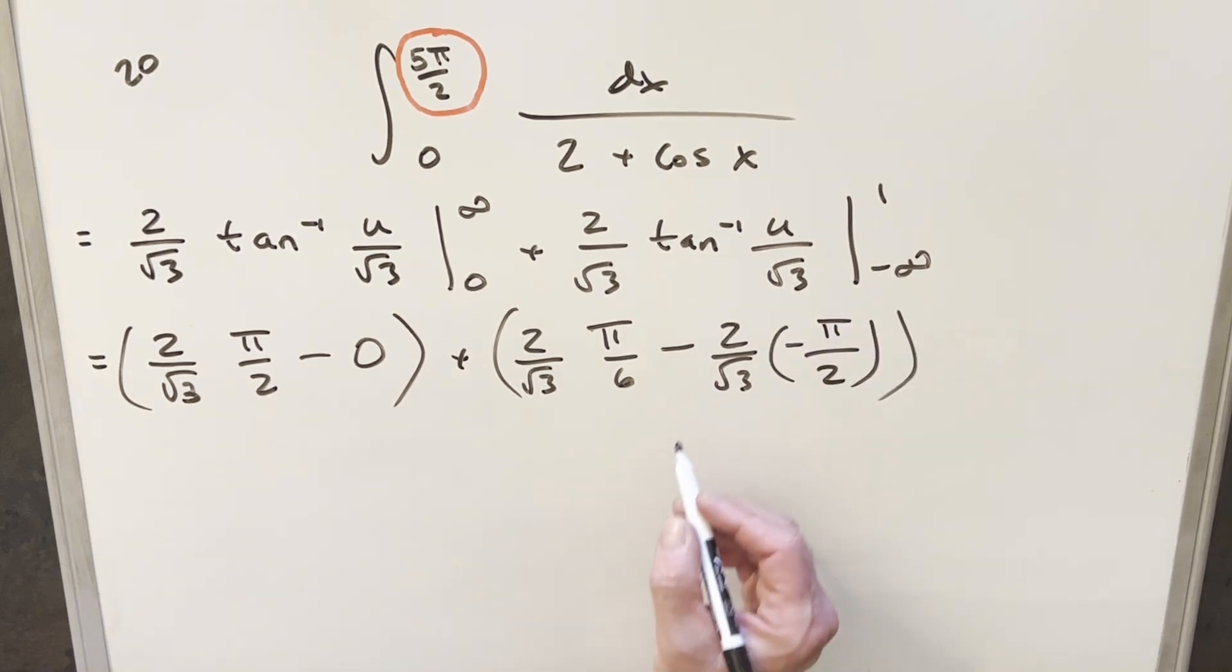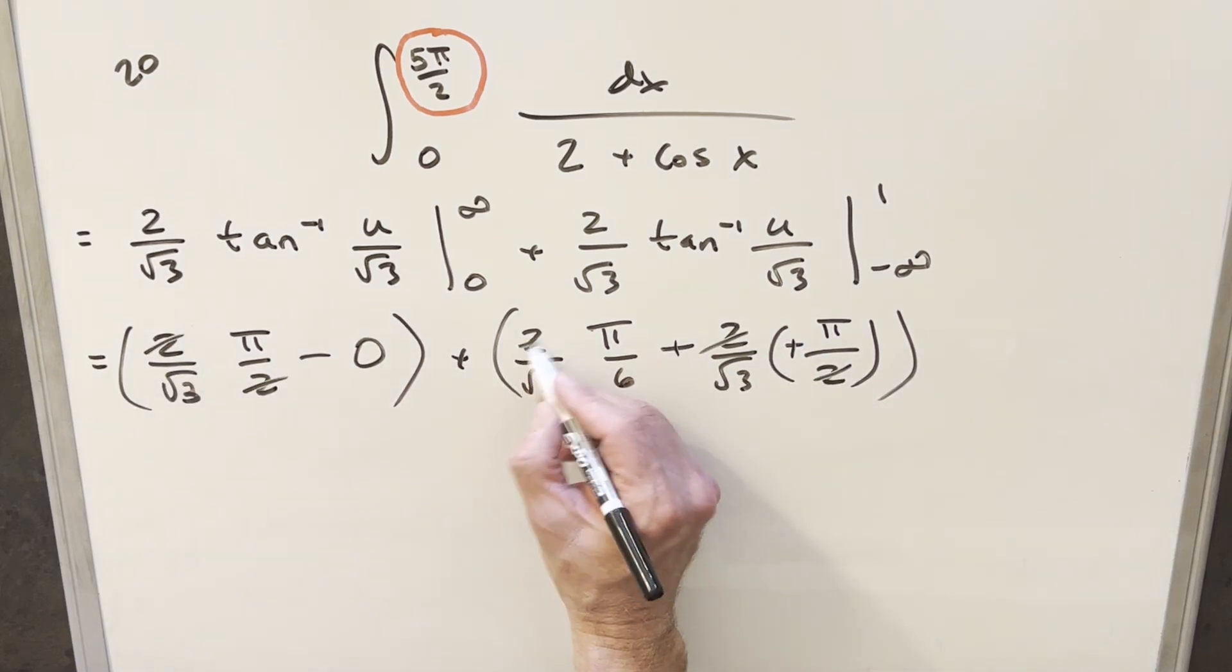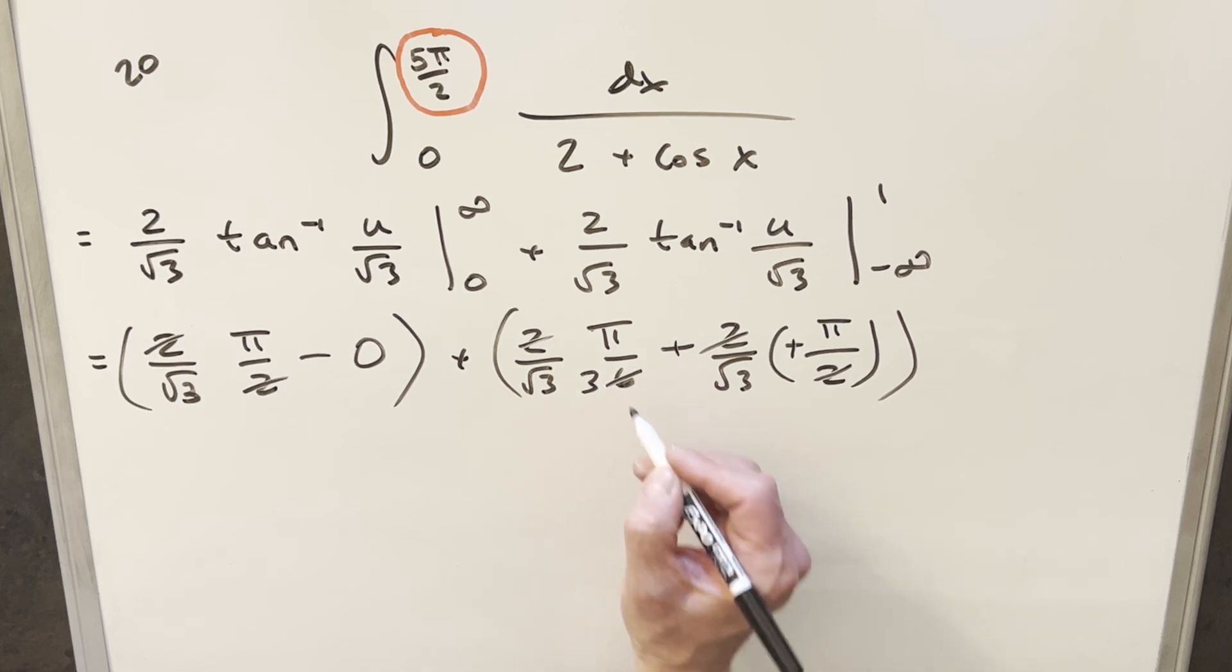And then let's just do a little cleanup. Over here, minus times minus is going to give me plus. Cancel 2s here. Cancel 2s here. Cancel 2 with a 6, and we end up with 3 here.